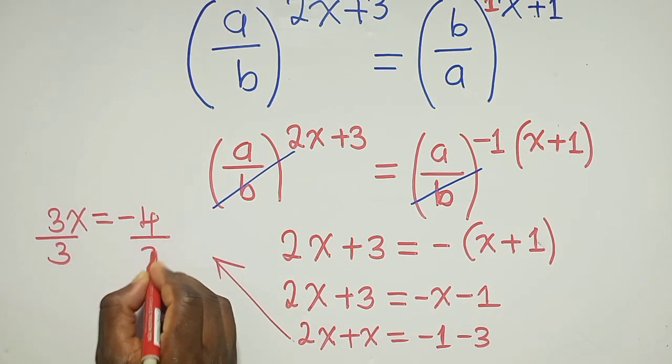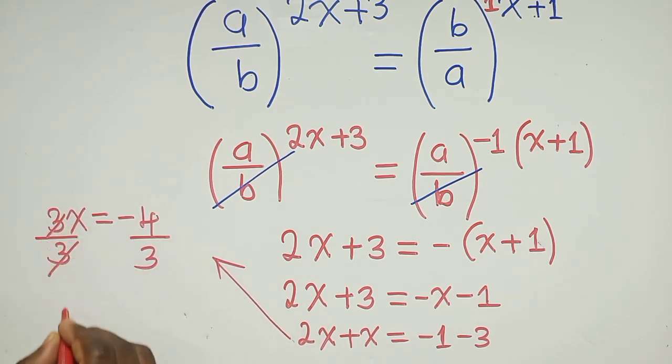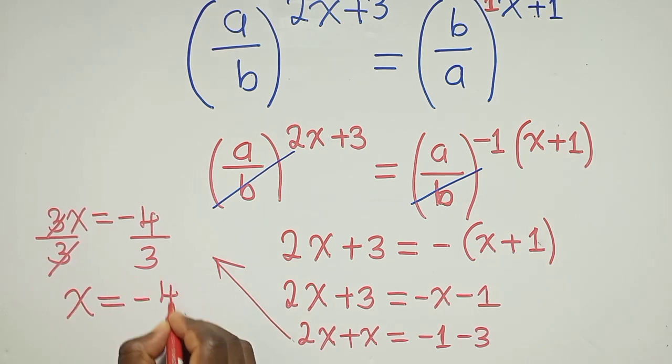Divide by 3 by 3. This and this will go. We shall remain with x is equal to negative 4 over 3. So this is the value of x.